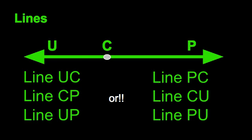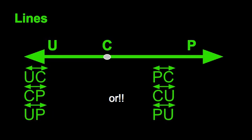Sometimes I also have another point on my line. You can name it once again with two letters, just like we do with line segments: line UC, line CP, line UP, or line PC, line CU, line PU. Sometimes it's fun to see how many combinations you can come up with. For math notation shorthand, you list your two letters — always two letters — with the line above the top.